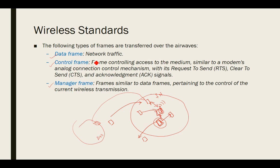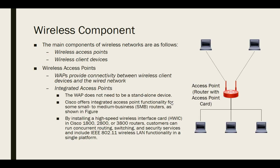The third type is the data frame, which carries the actual data and defines the network traffic. Data frames represent the actual data being sent over the wireless medium.